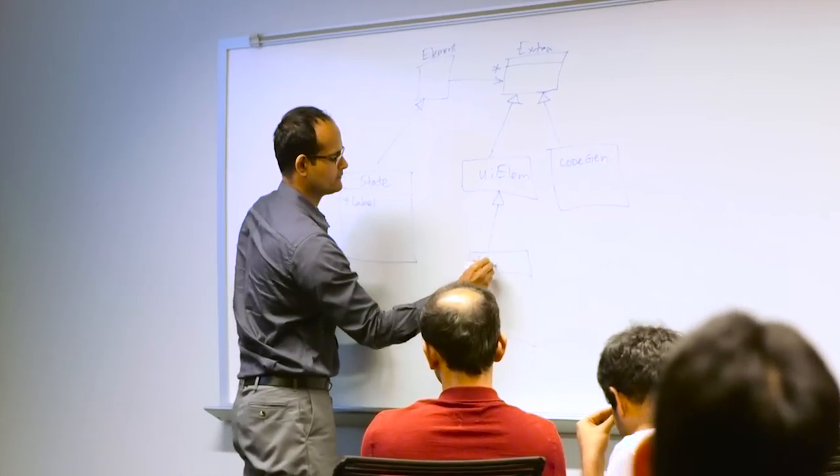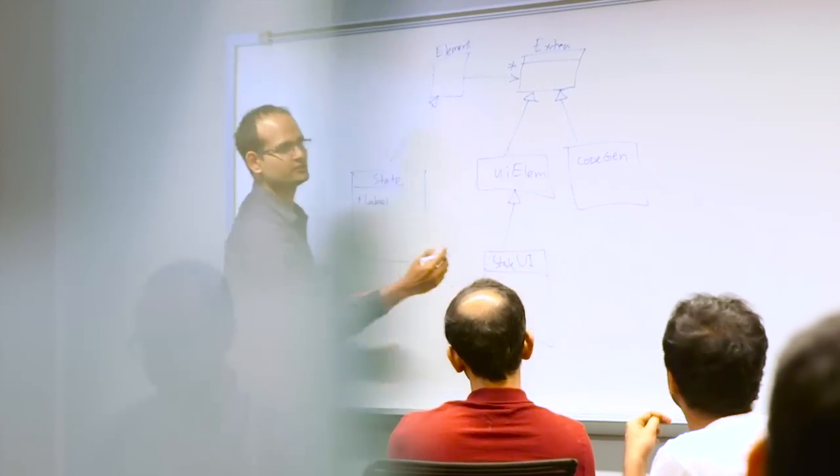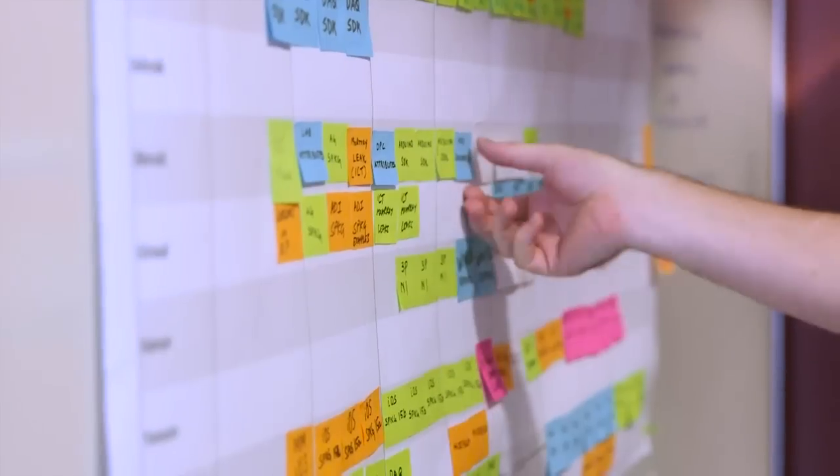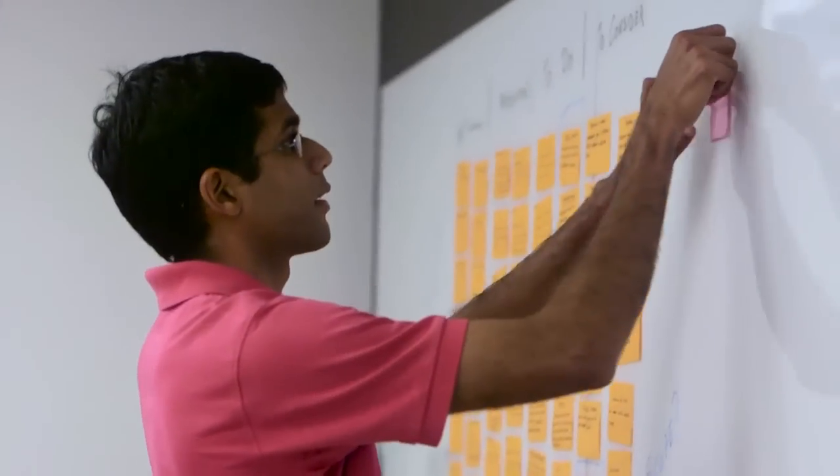Software development at MathWorks, it doesn't happen top down. Every single person on the team can look at a customer request and say, this is their problem and here are the ways we could solve it. So the prioritization, coming up with the solutions, this is all done bottom up by the team. Every person on the team gets a voice.